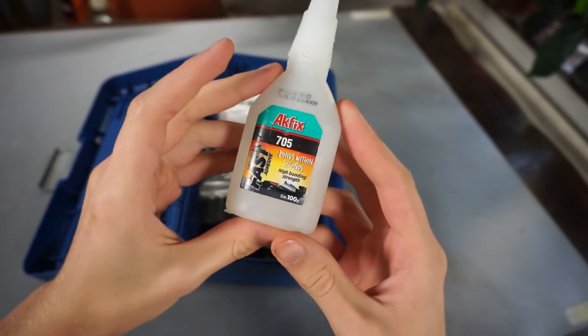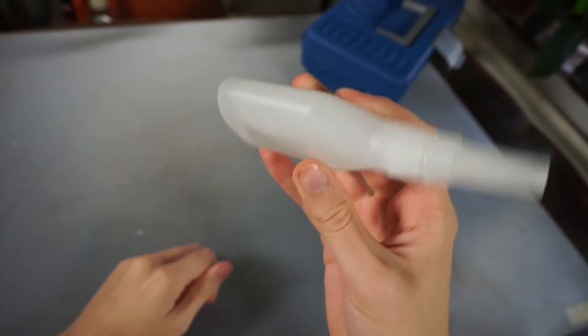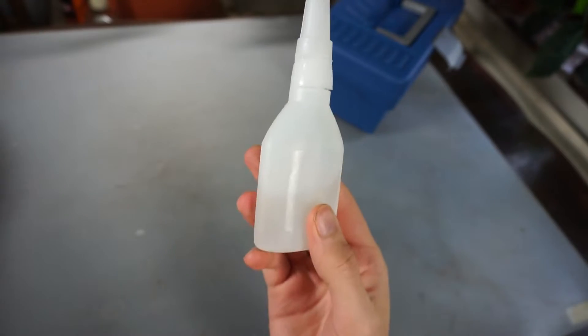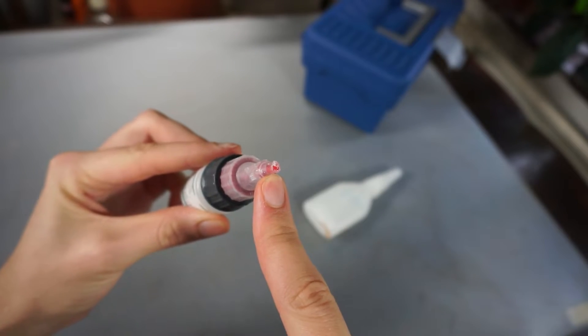This right here is some very powerful CA glue. The only problem with it is it's very thick. As you can see, it really takes a long time for the glue to move, meaning that if I want to put something like this in a smaller bottle, it will take a lot of pressure to get it out from the nozzle.